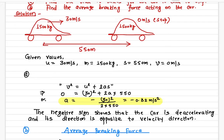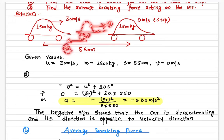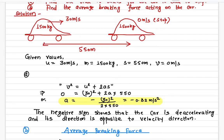What does the negative sign mean here? At any point along the path, the velocity is in the forward direction and the acceleration is in the opposite direction. The velocity and acceleration are opposite to each other because the car is coming to a stop — the velocity is decreasing. That's what the negative sign means: the acceleration is opposite to the velocity.